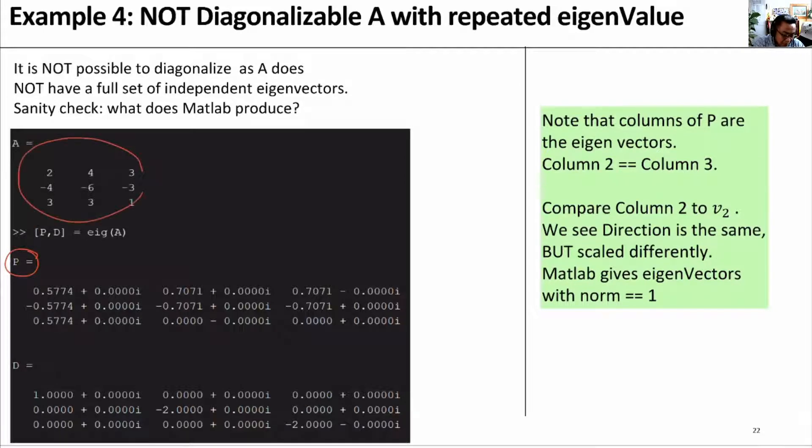This is A as before. Using EIG, we get P and D. So this is V1, this is V2, and this is V3. Notice that in fact, it produces exactly the same eigenvector. So V2 and V3 are the same.